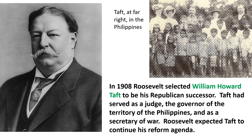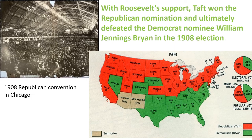In 1908, President Roosevelt decided he wasn't going to run again and selected William Howard Taft to be his Republican successor. Taft had served as a judge, as governor of the territory of the Philippines, and as Secretary of War, so he was well qualified. Roosevelt expected Taft to continue his reform agenda. With Roosevelt's support, Taft won the Republican nomination and ultimately defeated the Democratic nominee, William Jennings Bryan, in the 1908 election.